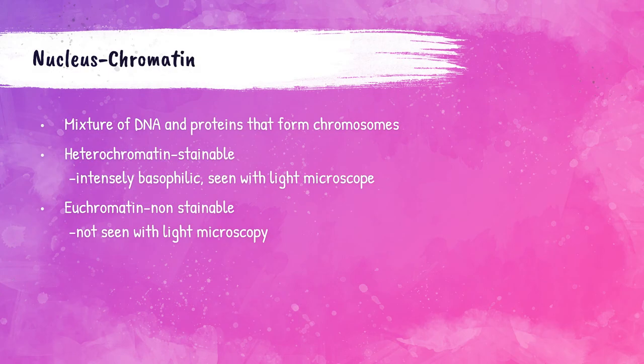Chromatin is a mixture of proteins and DNA that form the cell's chromosomes in the nucleus. There is stainable chromatin called heterochromatin and non-stainable chromatin called euchromatin. Heterochromatin has many condensed regions and stains very basophilic — that dark blue to purple color — and can be seen in light microscopy. Euchromatin makes up the genetically active part of the chromosome, and it does not stain and is not visible with light microscopy.